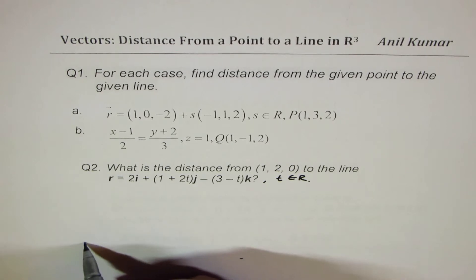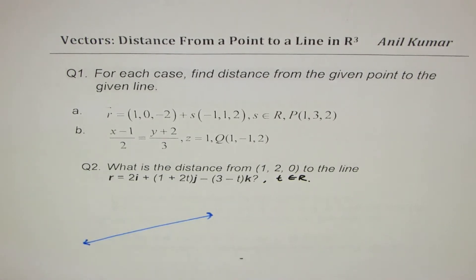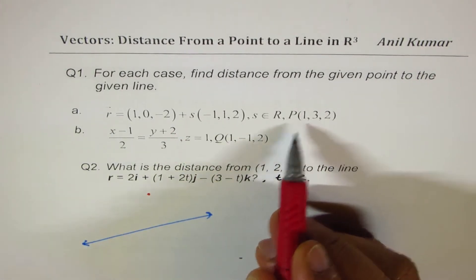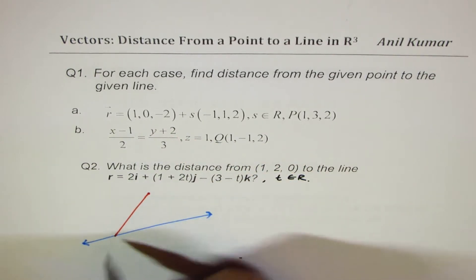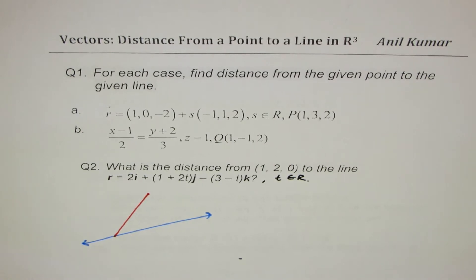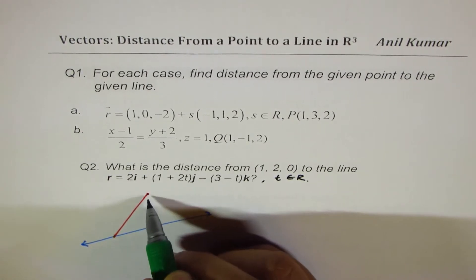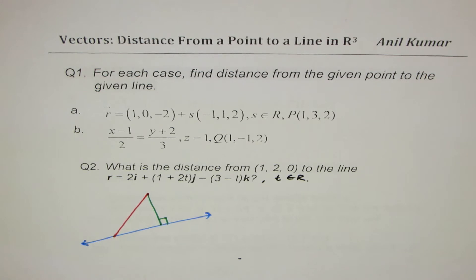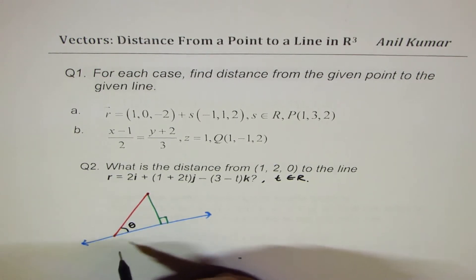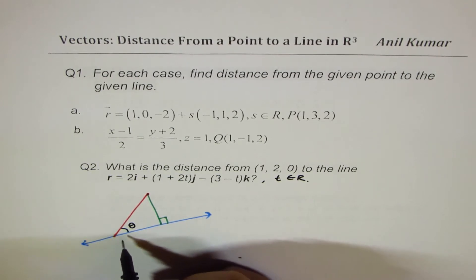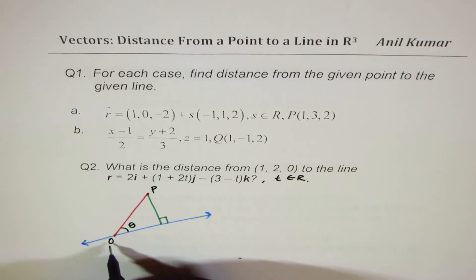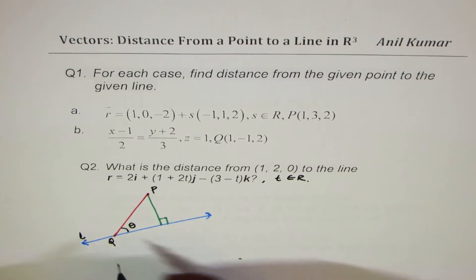Basically, what we're looking for is some line, and we're given a point somewhere. We could use this external point and a point on the line — when you join them, the distance from the given point to the line will be the perpendicular distance, which is normal to the line. If you look at this triangle where angle theta is formed with external point P and some point Q on the line L, the shortest distance is PM.